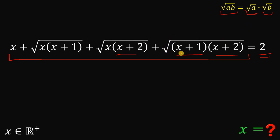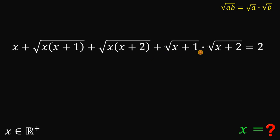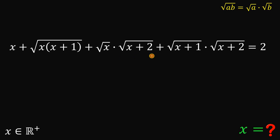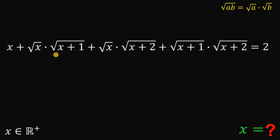Take note that we have square root of (x plus 1) multiplied by (x plus 2). This can be written as square root of (x plus 1) multiplied by the square root of (x plus 2). How about this term? We have square root of x multiplied by (x plus 2), so this can be written as square root of x times square root of (x plus 2). Similarly, the next term can be written as square root of x times square root of (x plus 1).